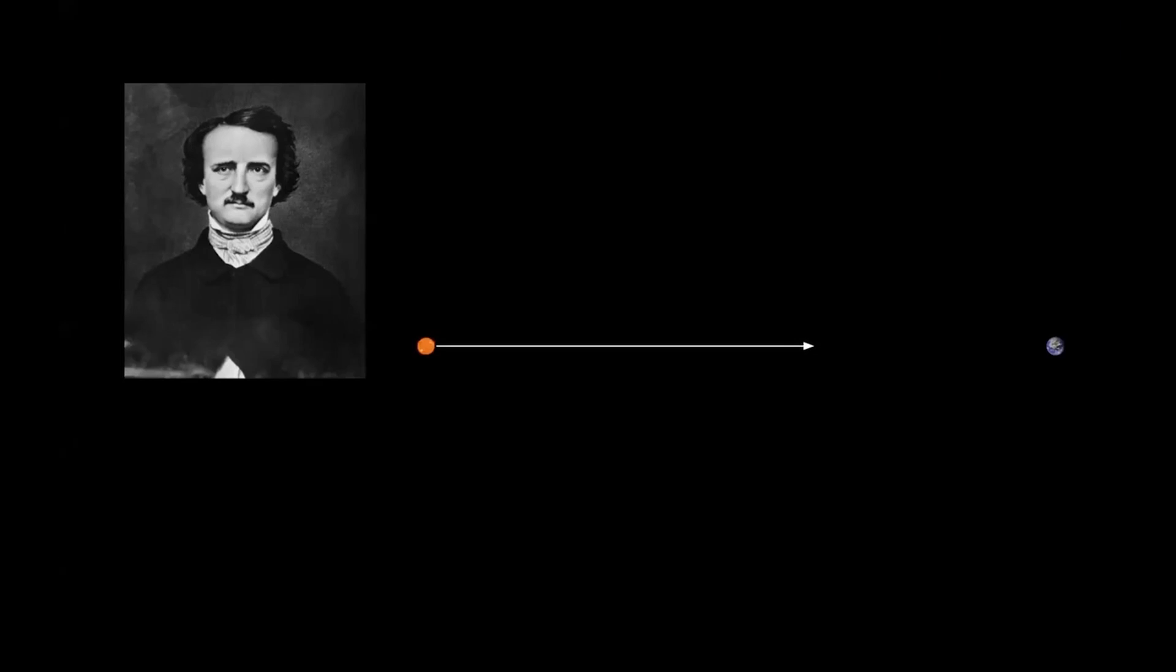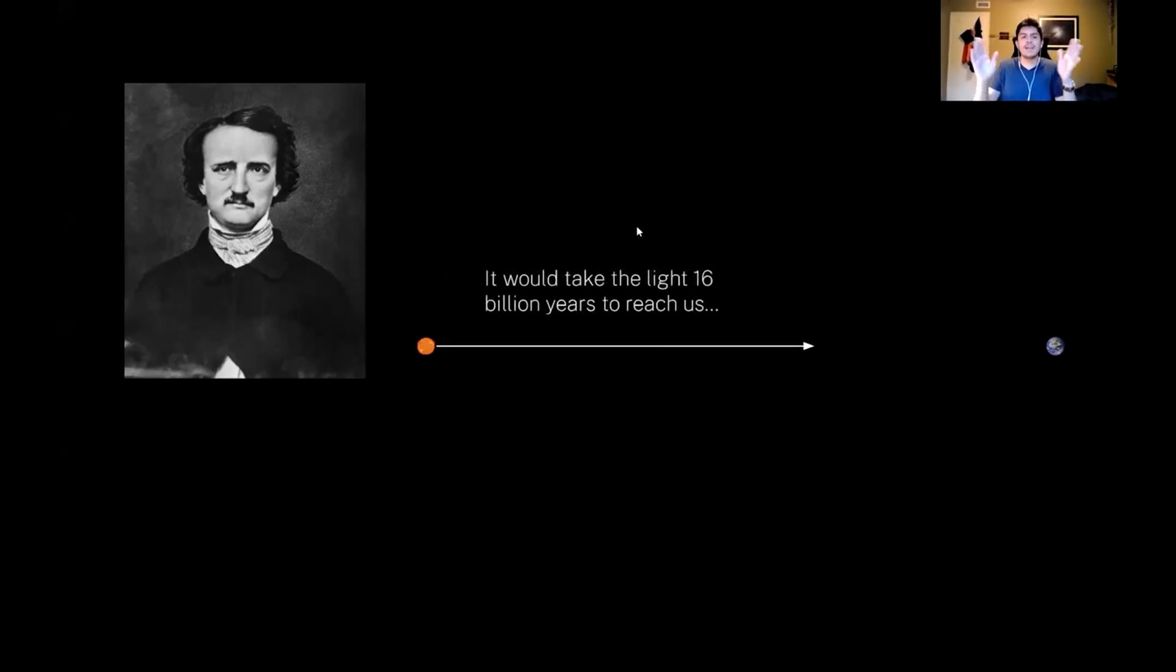So what Poe is saying, he's saying, look, let's say a star has formed in the universe. There it is. There's a star. It just formed. Its light is beginning to travel towards us here on Earth. And what Poe says, he says, look, this star is so far away, so far away that it would take the light 16 billion years to reach us.